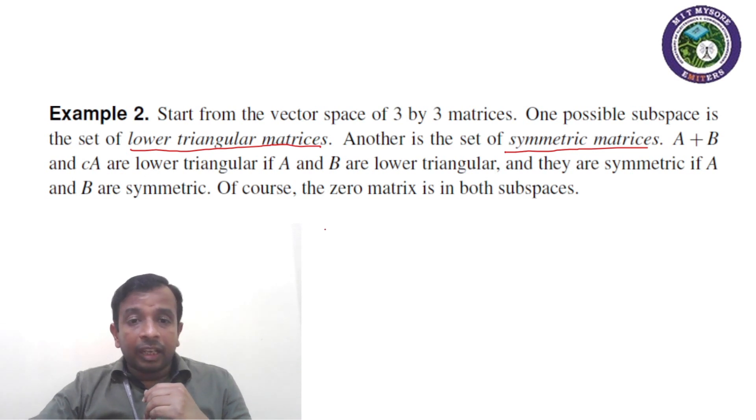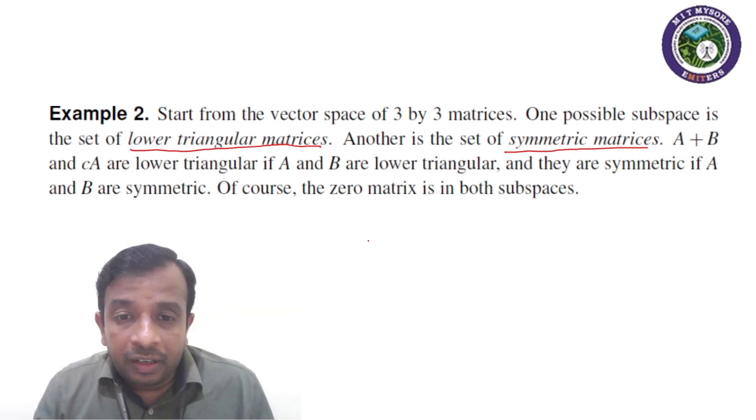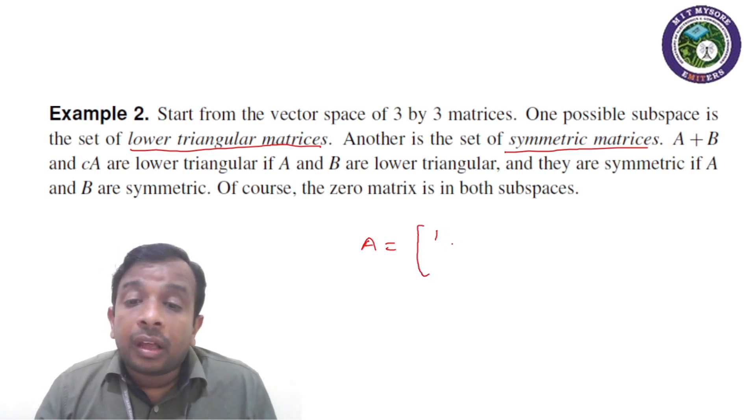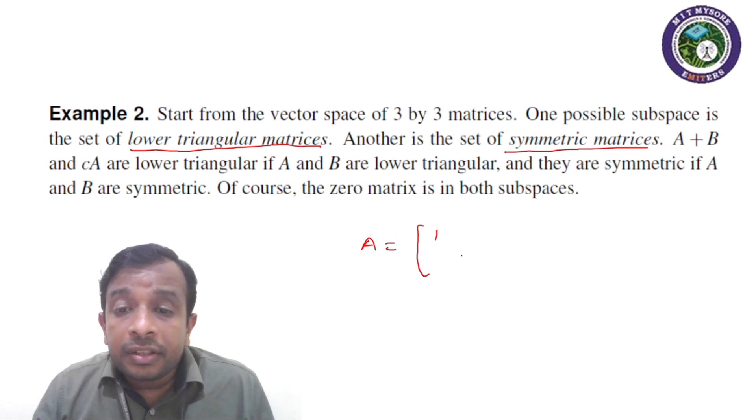Now if we take lower triangular matrices, that is, A is equal to say the elements above the diagonal elements are 0.